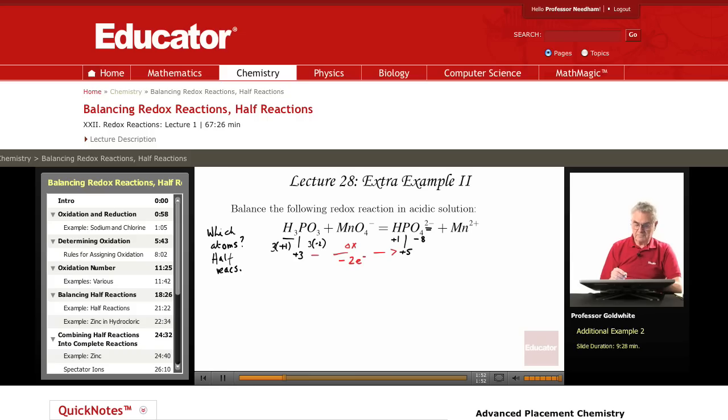Now, the other atom that is undergoing some sort of redox change must be manganese. Hydrogen and oxygen don't undergo redox changes in such reactions. Here it's very easy. The manganese must be plus 2 because that is the charge. And here we have negative 8 for the 4 oxygens. The manganese therefore must be positive 7 to make the overall charge on the permanganate ion negative 1. So the manganese has undergone reduction and has added 5 electrons.